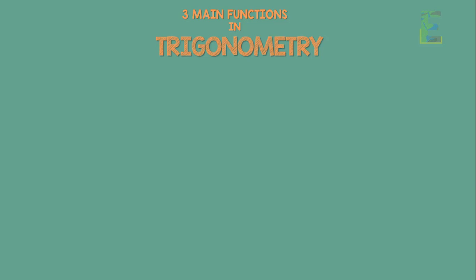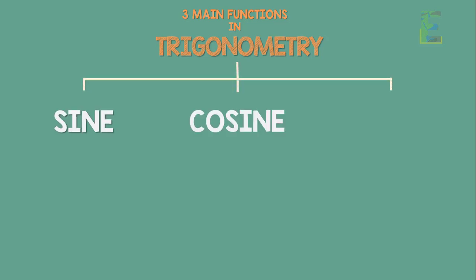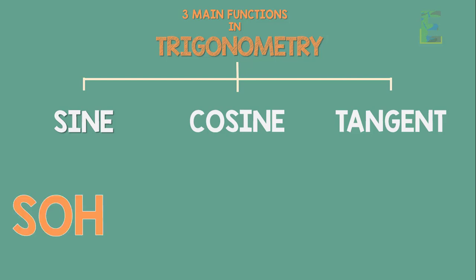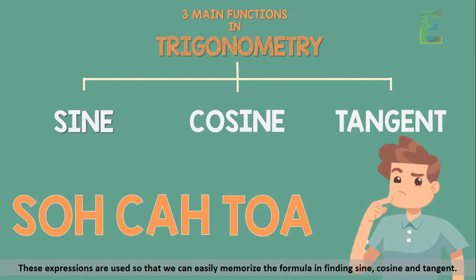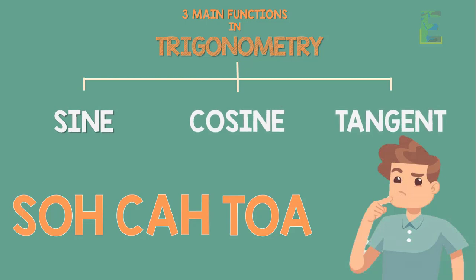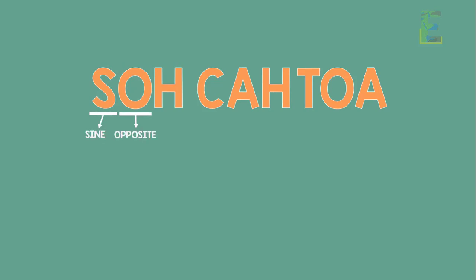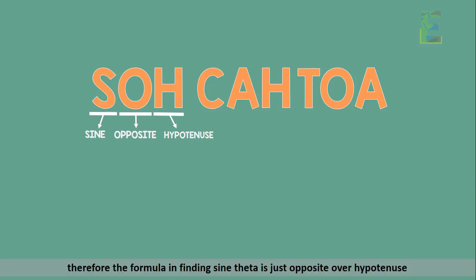Now let's talk about the three main functions in trigonometry: sine, cosine, and tangent. Have you ever heard about the expression SOH-CAH-TOA? These expressions help us easily memorize the formulas. For SOH: S stands for sine, O stands for opposite, and H stands for hypotenuse. Therefore, sine theta is equal to opposite over hypotenuse.